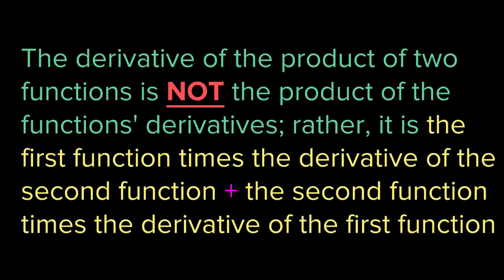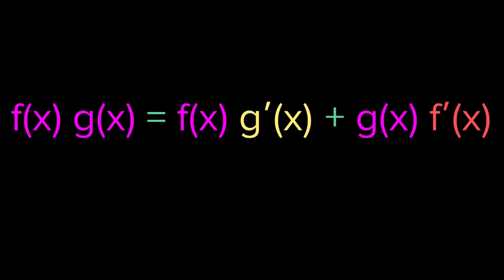The rule is: the derivative of the product of two functions is not the product of the functions' derivatives. So when you have two functions multiplied by each other, you don't simply take the first derivative and the second derivative and multiply them. Actually, the rule is the first function times the derivative of the second function, plus the second function times the derivative of the first function. So if we have f(x) times g(x), the derivative is f(x) times g′(x) plus g(x) times f′(x).